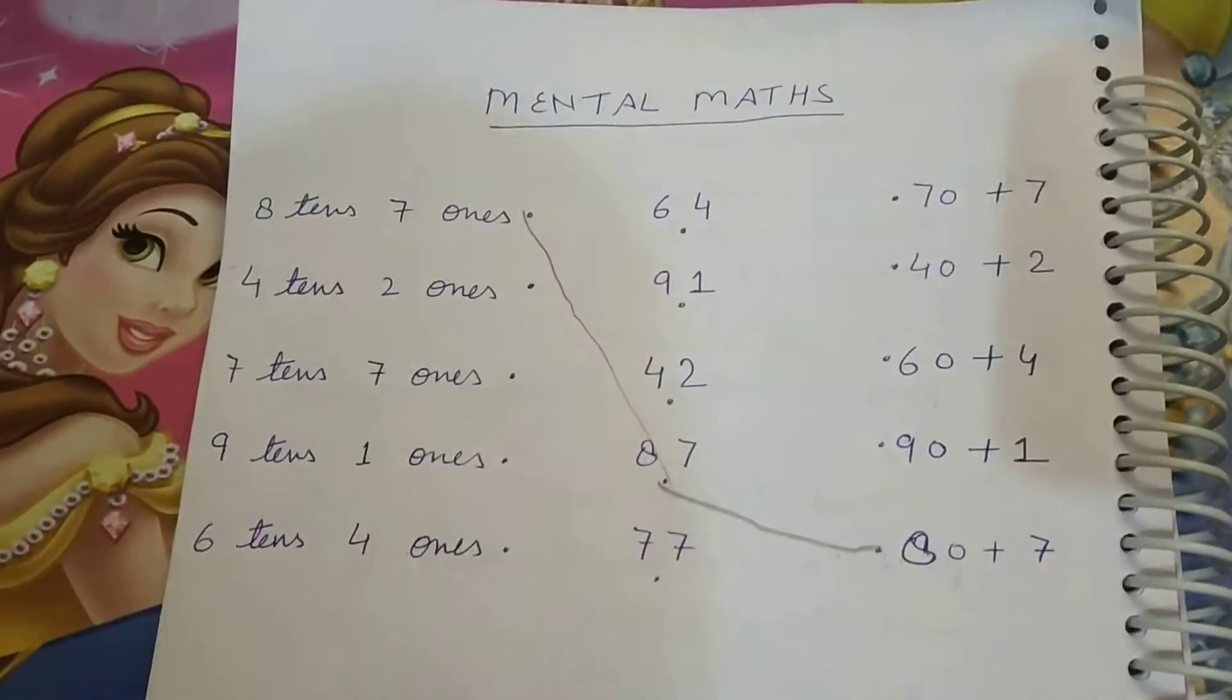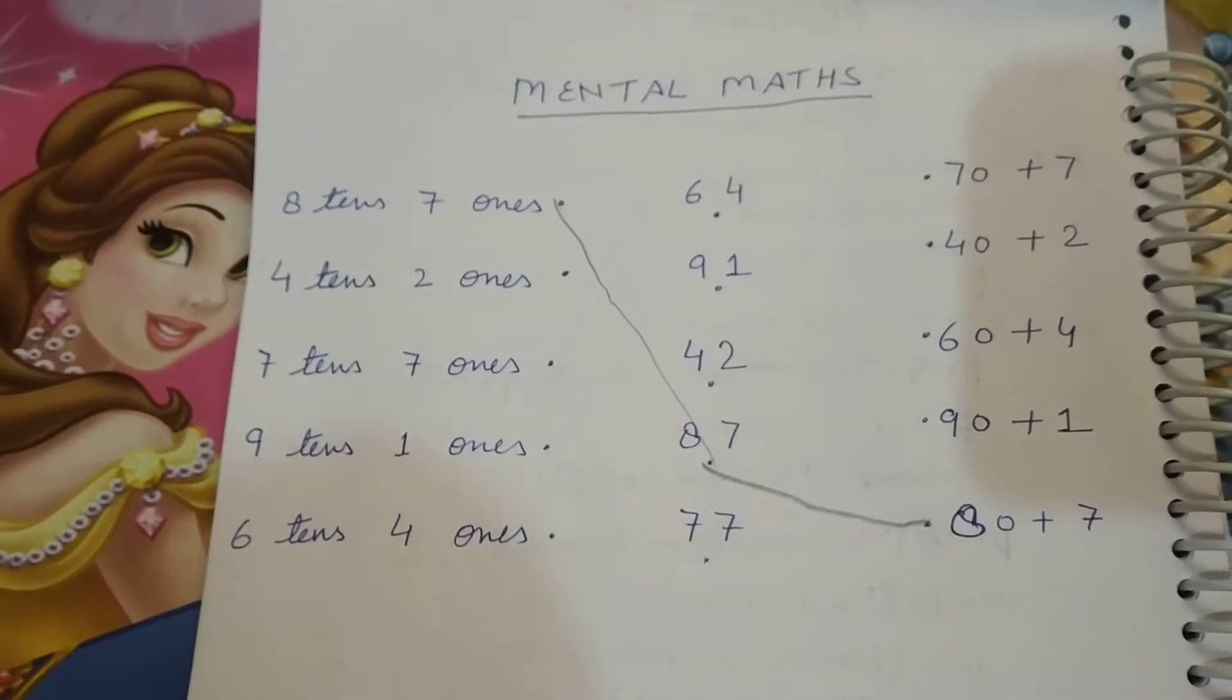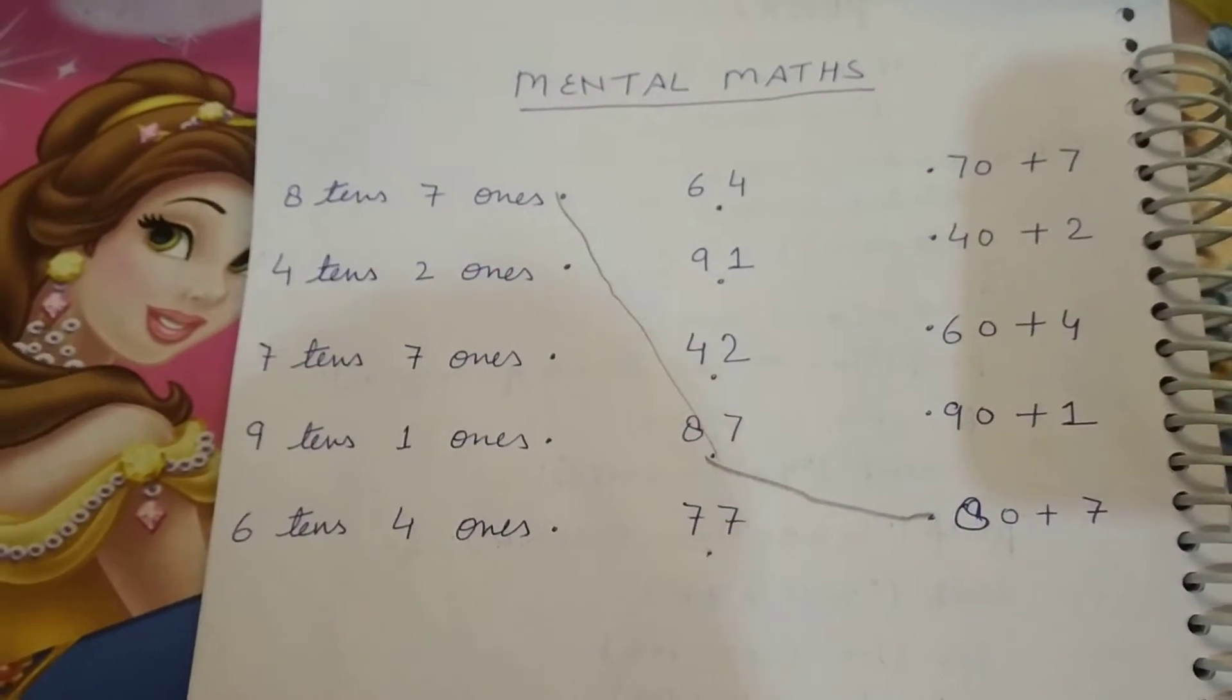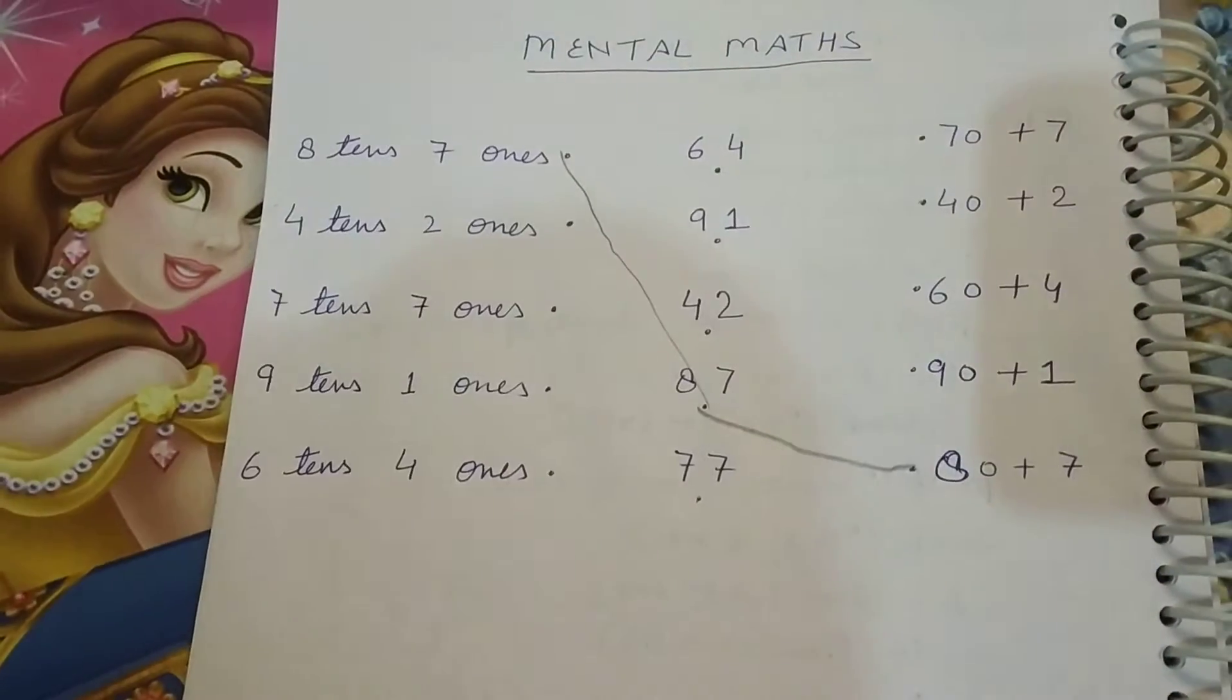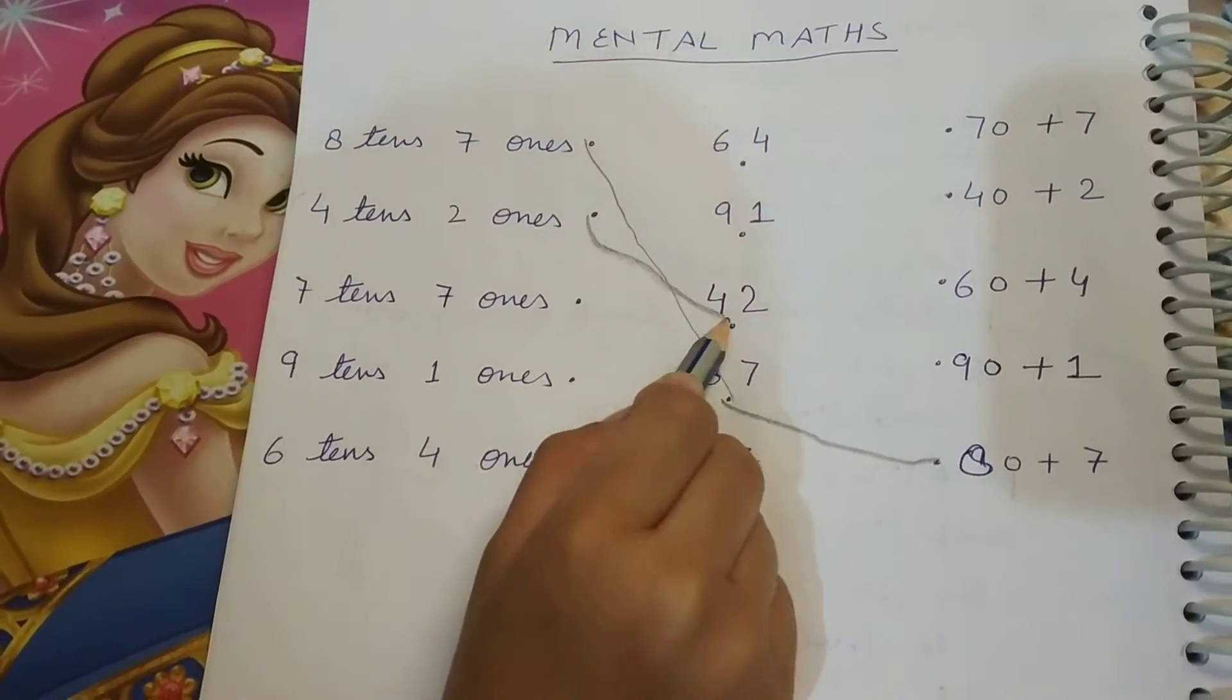Now four tens and two ones. What's that? 42. This line. Where is this line? 42? Yeah. Match it. 42. Good.